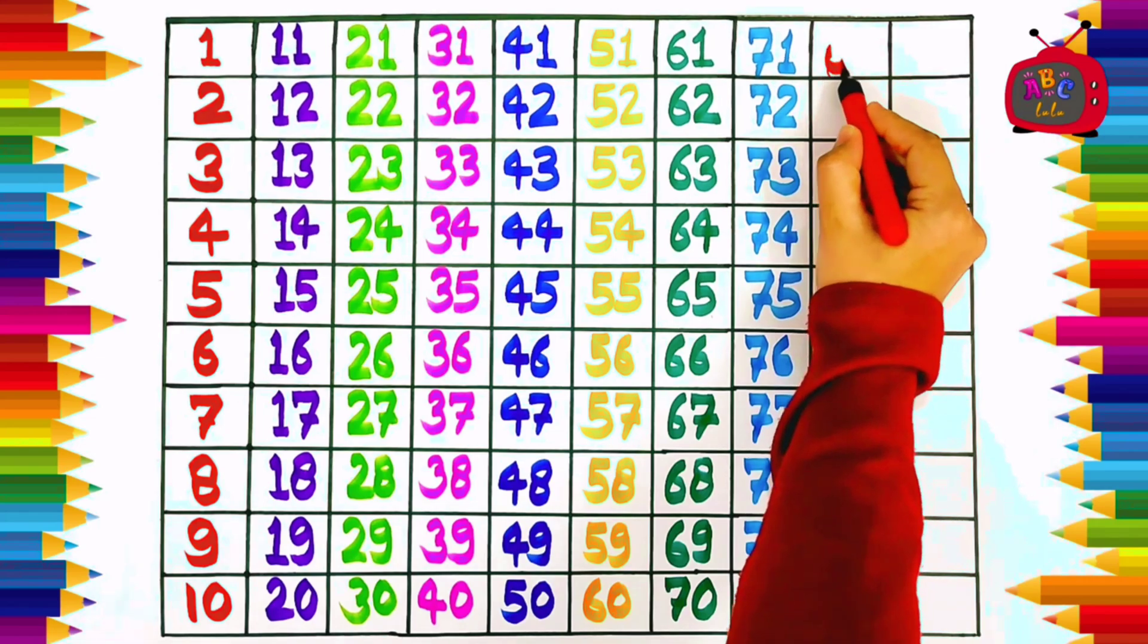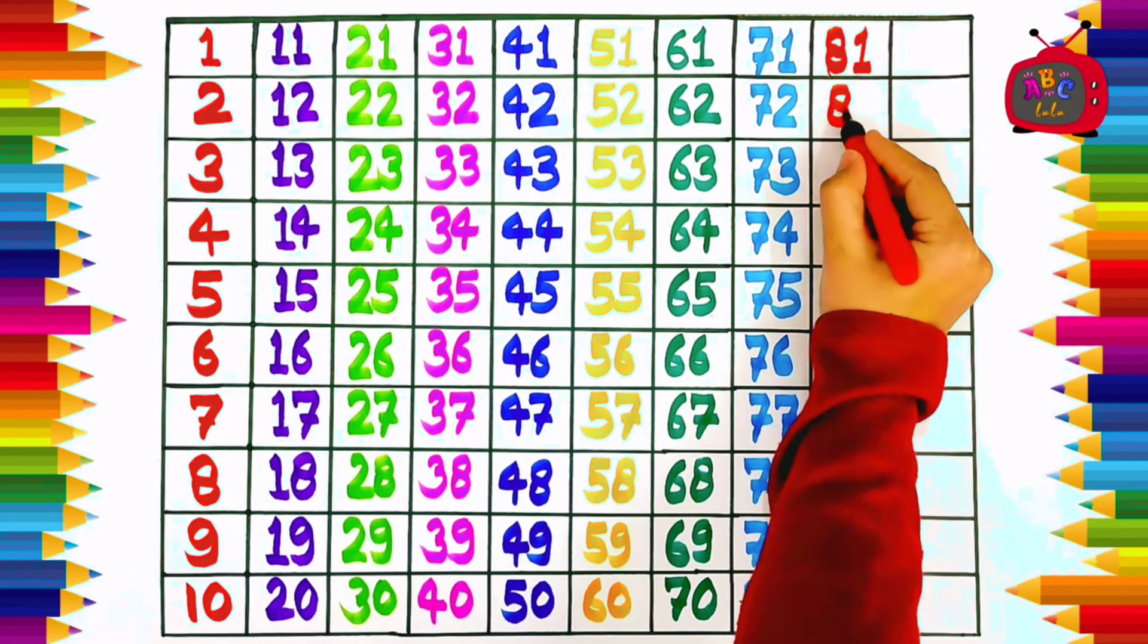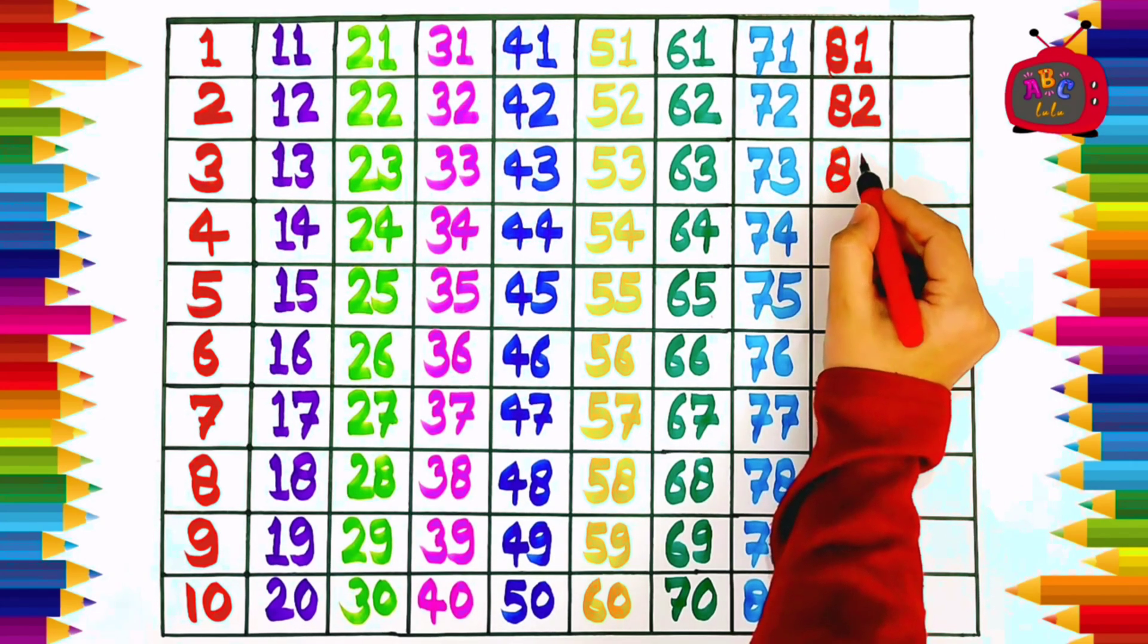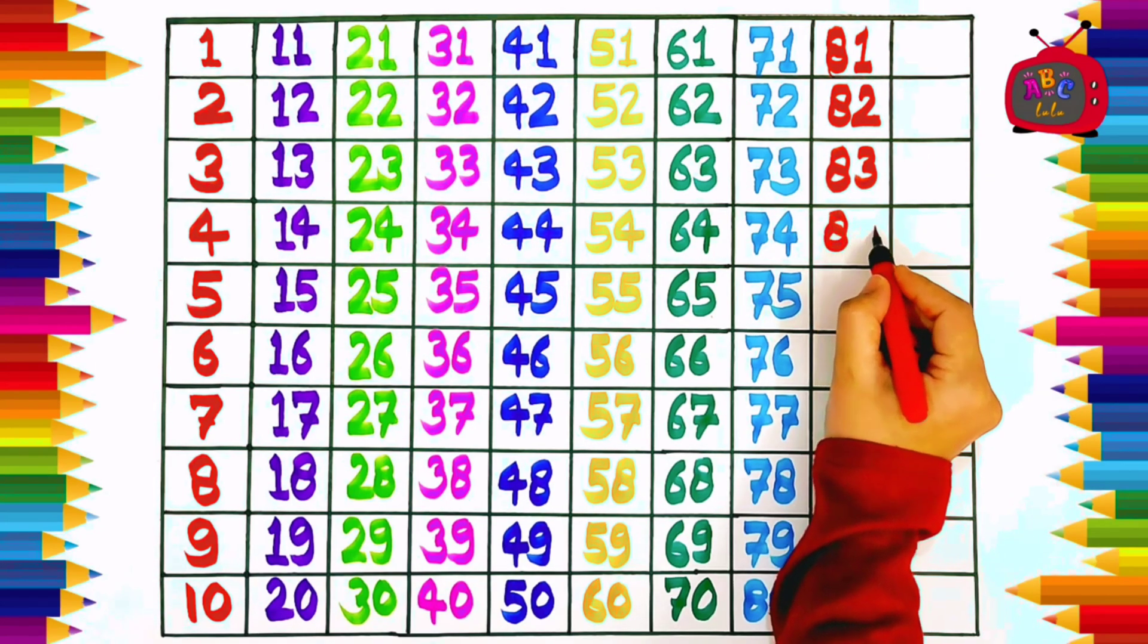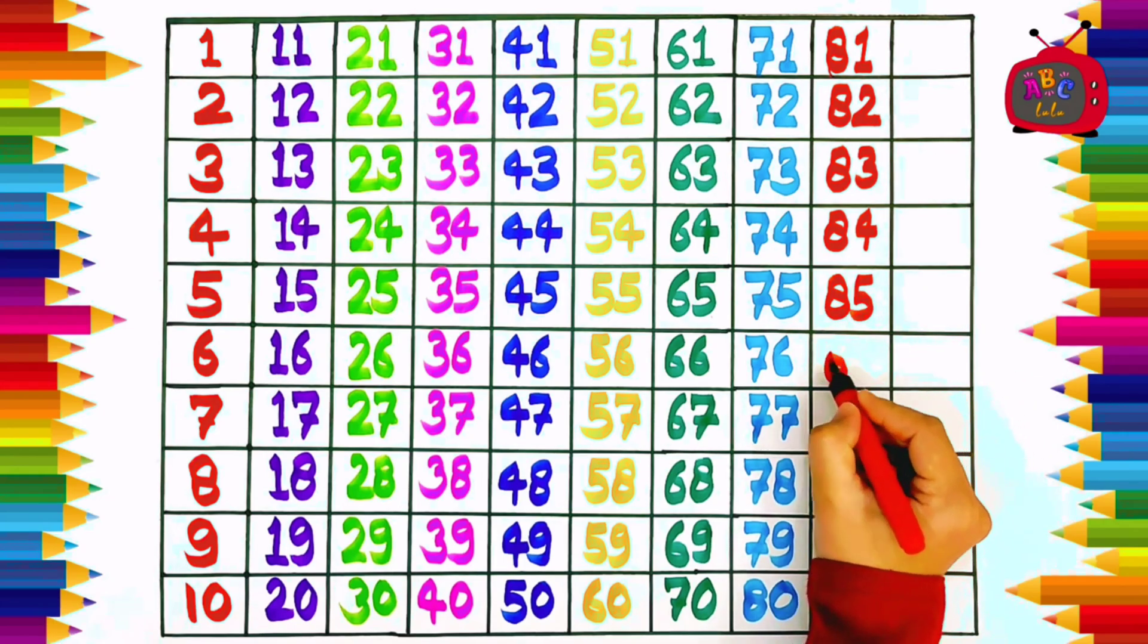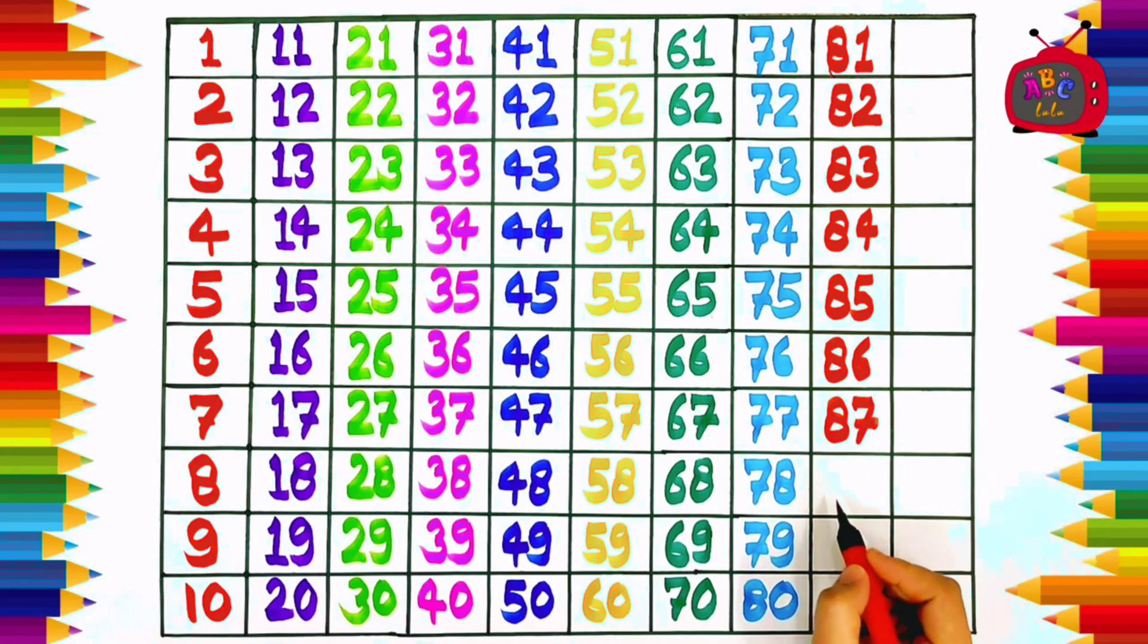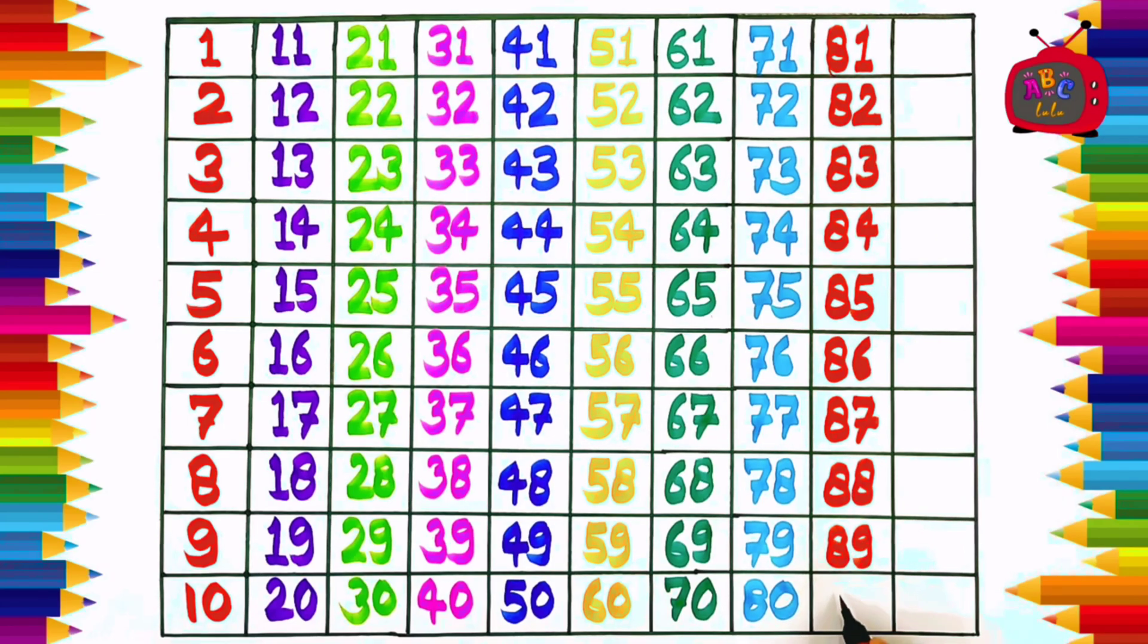Eight one, eighty-one. Eight two, eighty-two. Eight three, eighty-three. Eight four, eighty-four. Eight five, eighty-five. Eight six, eighty-six. Eight seven, eighty-seven. Eight eight, eighty-eight. Eight nine, eighty-nine. Nine zero, ninety.